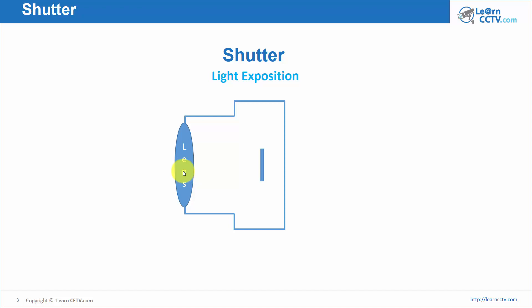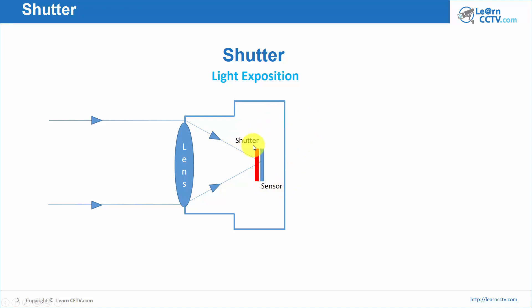Here is a simple camera diagram to help you understand how it works. I have the lens, the camera body, and in the back the sensor. The sensor captures the light coming through the lens — it could be a CCD or CMOS depending on the camera. In between, there is a shutter. This shutter controls the light and specifically controls the exposure time to light — how long the light hits the sensor. That's what the shutter does: it controls exposure time.